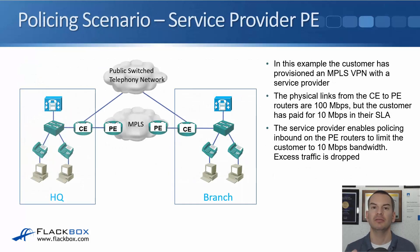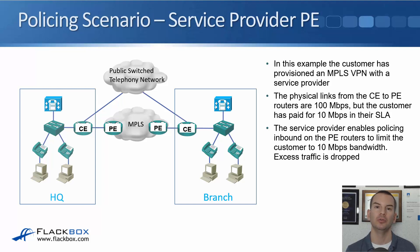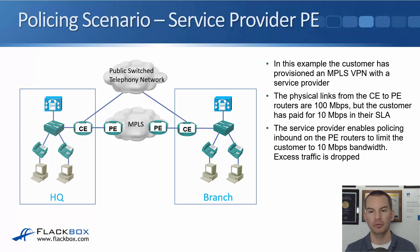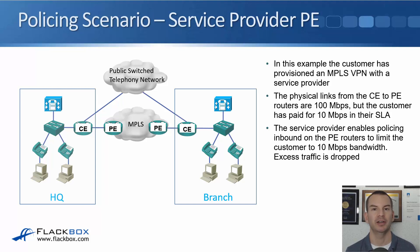Let's look at the scenarios where this would be used — it's the easiest way to understand it. In this example, the customer has provisioned an MPLS VPN between their headquarters and their branch offices. The physical links from the CE to the PE routers on both sides are 100 megabits per second, fast Ethernet. But the customer has only paid for 10 megabits per second in their service level agreement with the service provider.